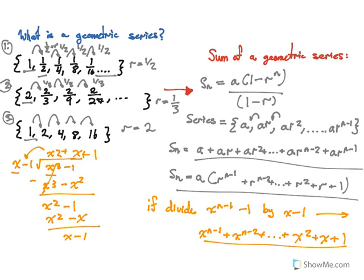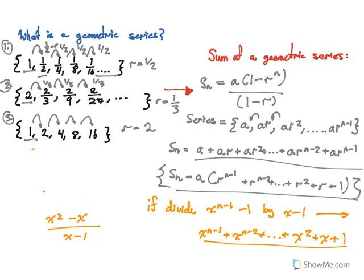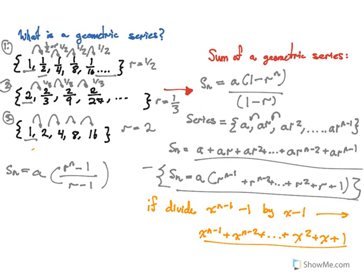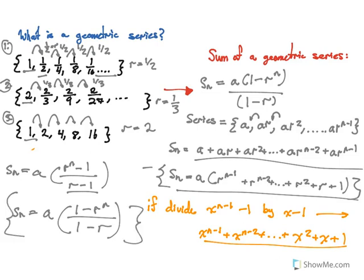So we can actually rewrite our sum equation using this principle. Our sum is equal to a times r to the n minus one, over r minus one. And since we are subtracting one, r to the n minus one is actually equal to the negative of one minus r to the n. And r minus one is equal to the negative of one minus r. So we can reverse the order of both of those and write a times one minus r to the n over one minus r. And that's how we derive this formula.